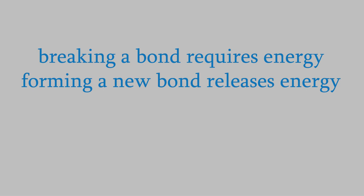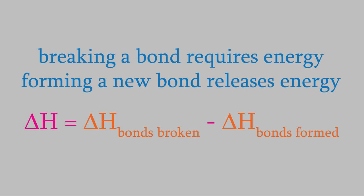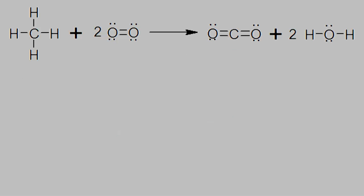That means we can calculate the approximate enthalpy of a reaction by using this formula. The change in enthalpy is approximately equal to the enthalpies of the bonds we break, minus the enthalpies of the new bonds we form. For example, look at the combustion reaction of methane again.